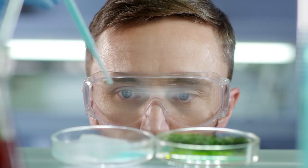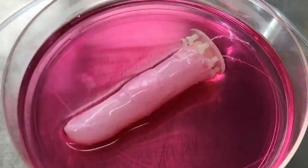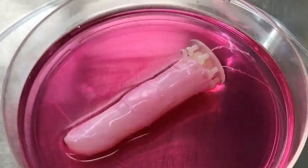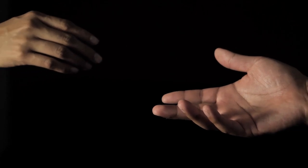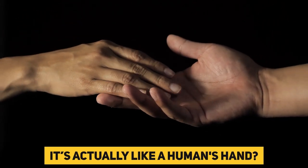Researchers in Japan claim to have grafted living human skin onto a robotic finger as the first step toward making this a reality. How would you feel shaking a robot's hand and it's actually like a human's hand?